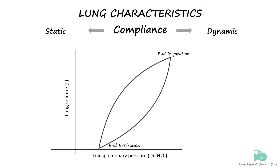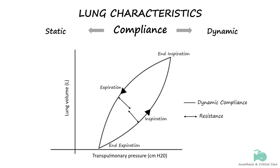Static and dynamic compliance can be represented graphically with a pressure-volume loop. This diagram is called a compliance curve, where the top curve represents expiration and the bottom curve represents inspiration. The slope of this curve represents dynamic compliance, as these are plotted during airflow or while breathing. Because these curves are dynamic representations of breathing, there is resistance both during inspiration and expiration. The space between the curves represents the resistance — that is, the energy needed to overcome inspiratory or expiratory resistance, which is termed the work of breathing.